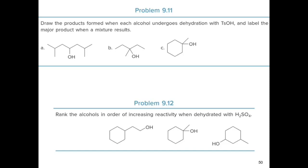Here's practice problem number 12: rank the following alcohols in order of increasing reactivity when dehydrated with sulfuric acid. Comparing the alcohols by classification: molecule A is primary, molecule B is tertiary, and molecule C is secondary. In order of increasing reactivity: A is least reactive, followed by C, then B — the tertiary alcohol is most reactive.